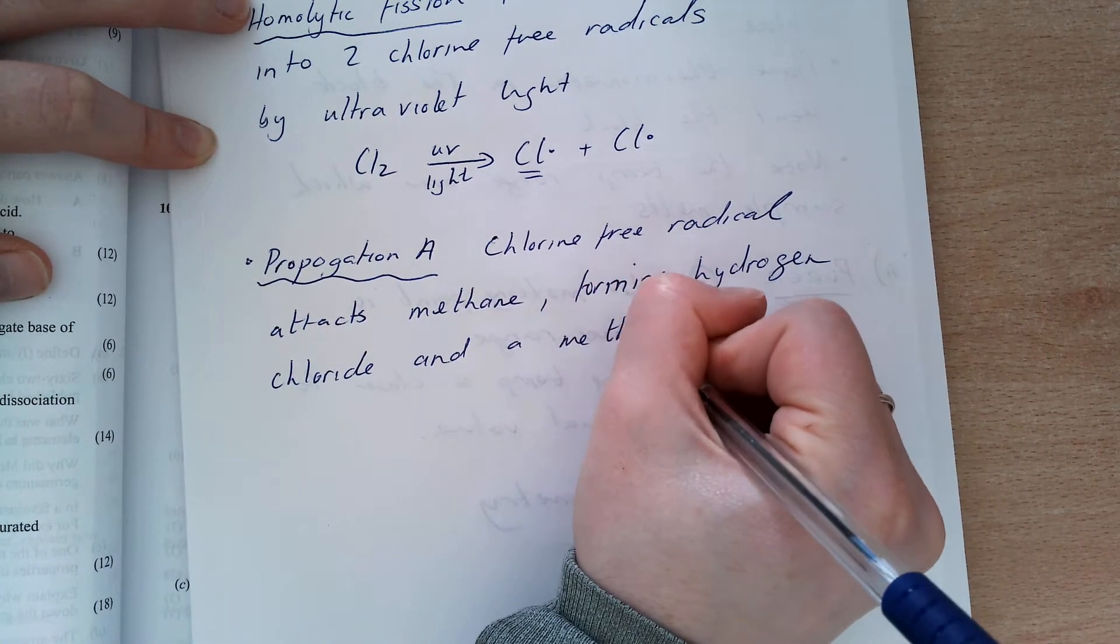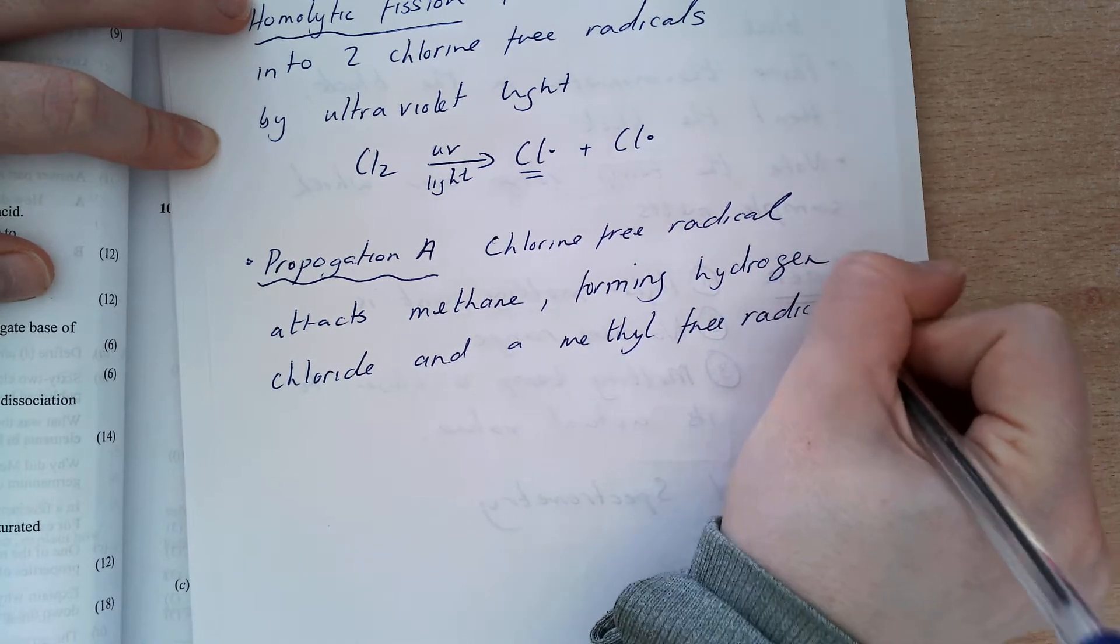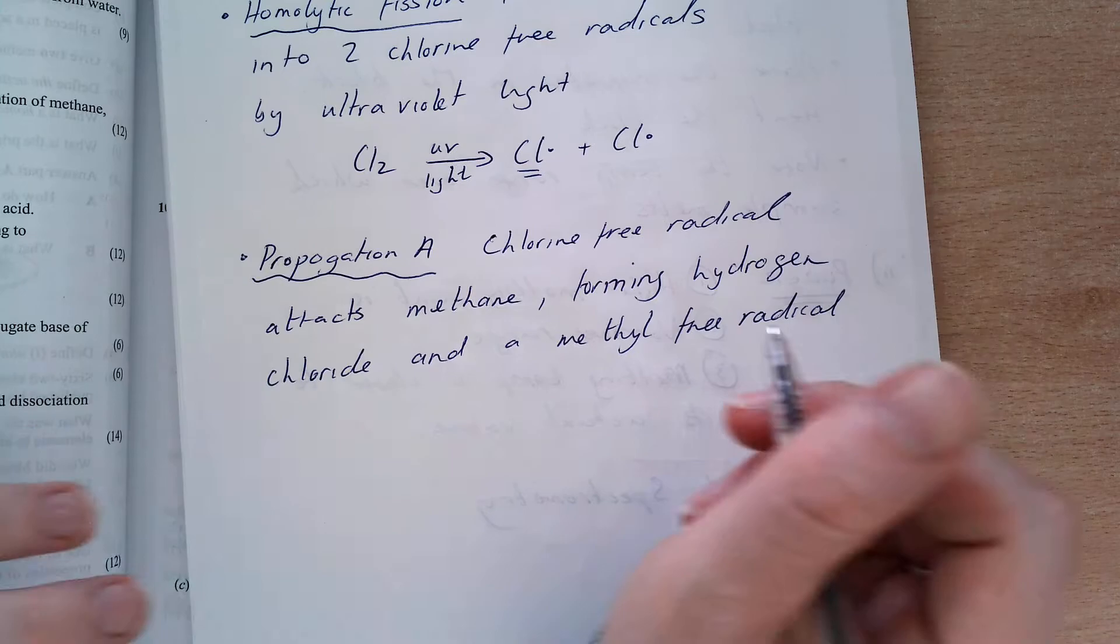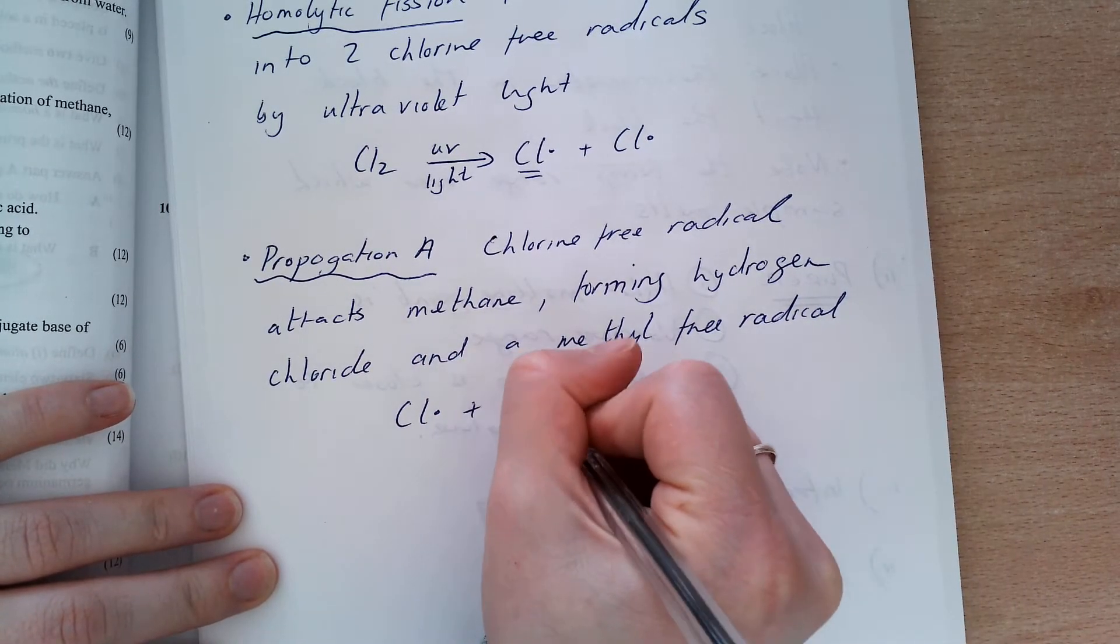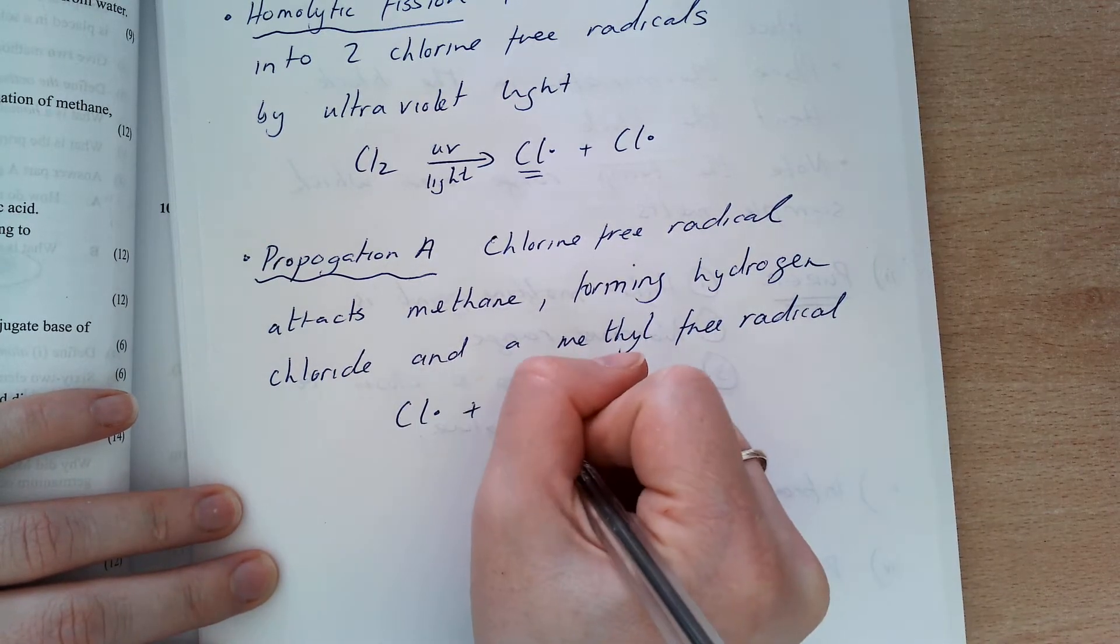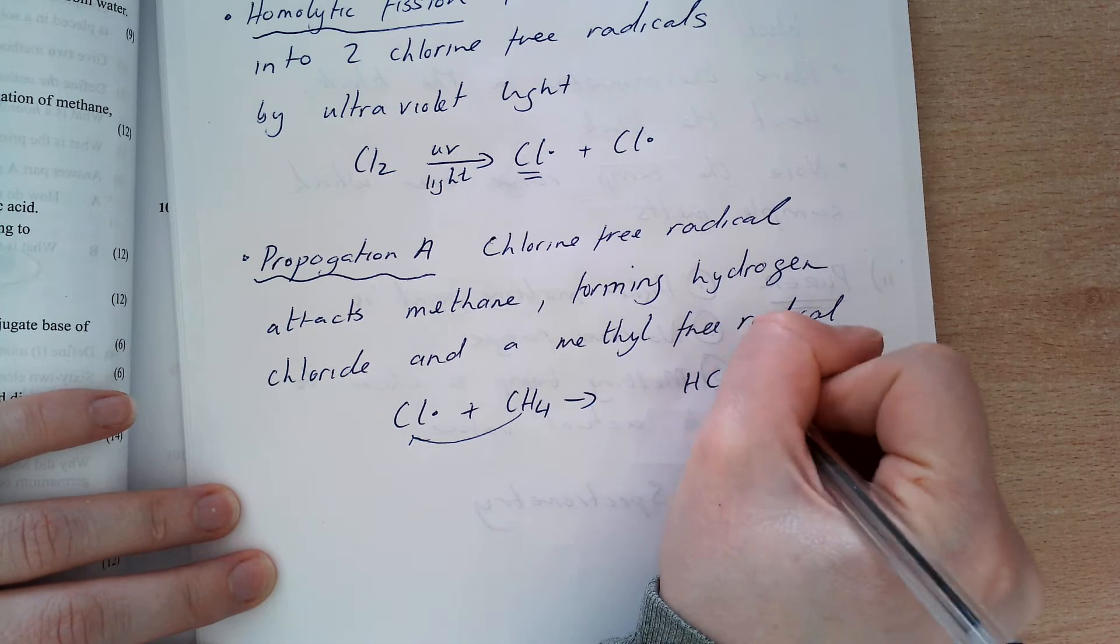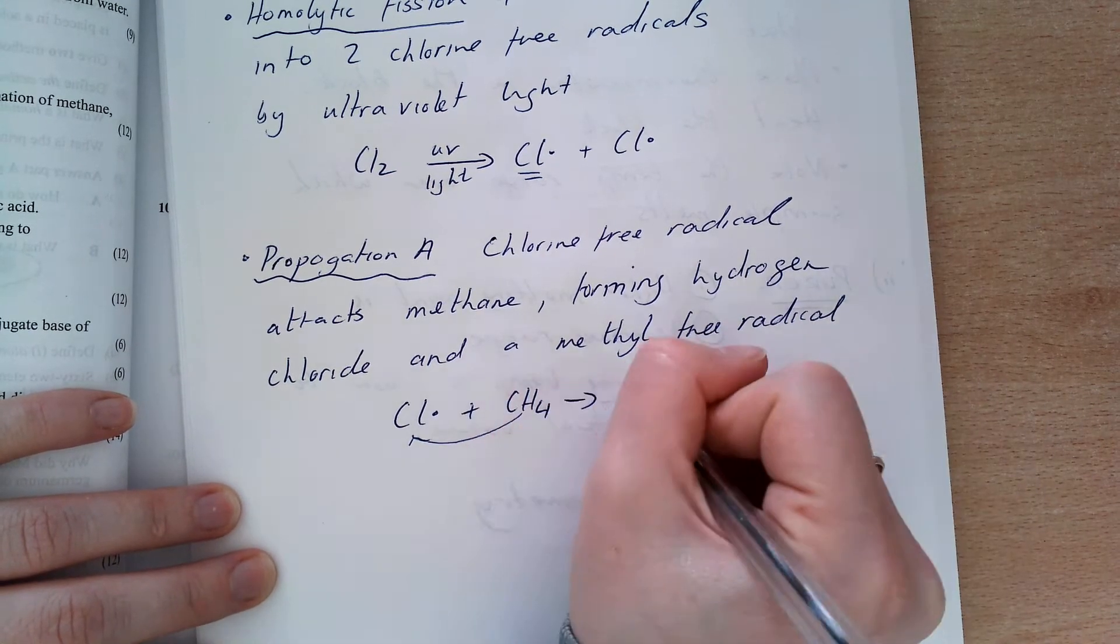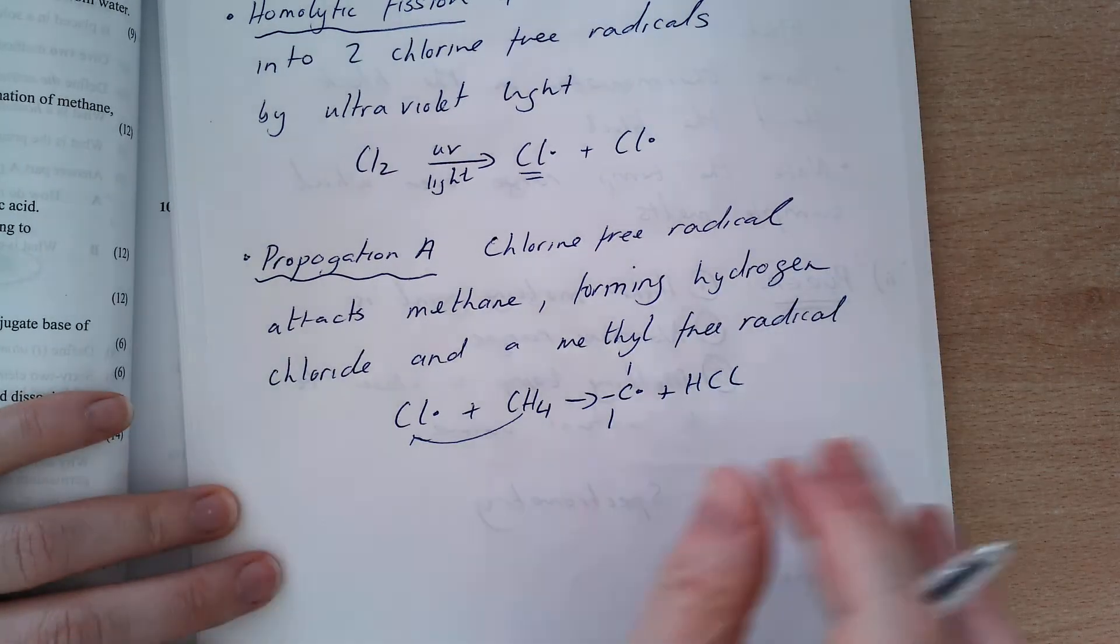So this chlorine-free radical attacks a methane molecule, CH4, and it drags one of those HCls away to give hydrogen chloride, and one of the H's is gone. So it gives a methyl-free radical here.